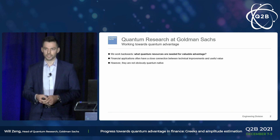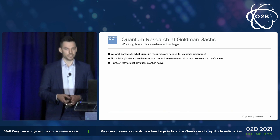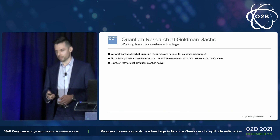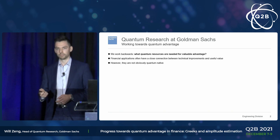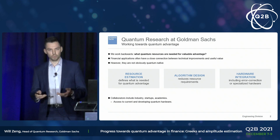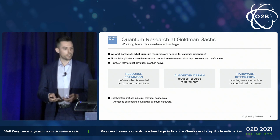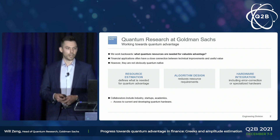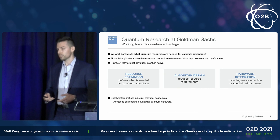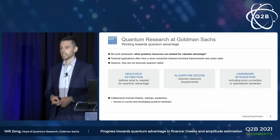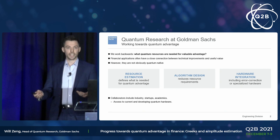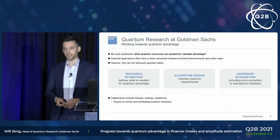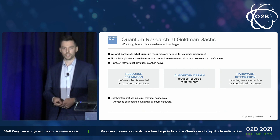There are some advantages in finance: the problems are well-specified and the value is pretty clear. But there are disadvantages — these are not obviously quantum-native problems. So we attack this in a few ways: resource estimation, algorithm design, and integrating with hardware — not just today's hardware, but importantly the hardware we're hoping to have over the next decade. And we work closely with collaborators in industry, startups, and academia.